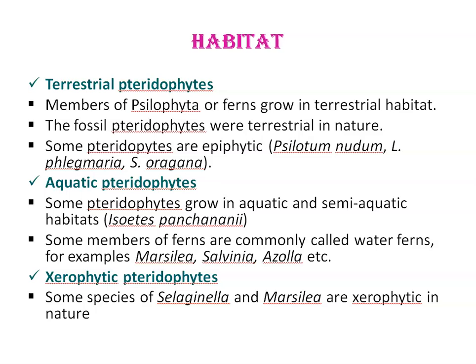Some Pteridophytes grow in aquatic and semi-aquatic habitats. Some members of ferns are commonly called water ferns — for example Marsilea, Salvinia, and Azolla. Some species of Selaginella and Marsilea are xerophytic in nature.